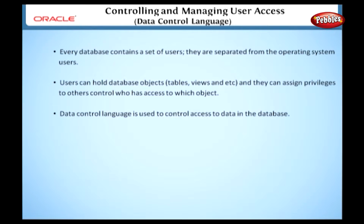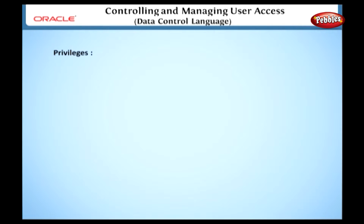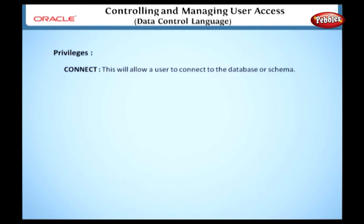Now we are going to see data control language. Data control language is used to control access to data in the database. From this definition, we would understand the uses of data control language. Here we will see the data control commands. These two commands are used to give and revoke permissions to the user to access the data in a database. Before we learn in detail about these two commands, we will see some of the privileges.